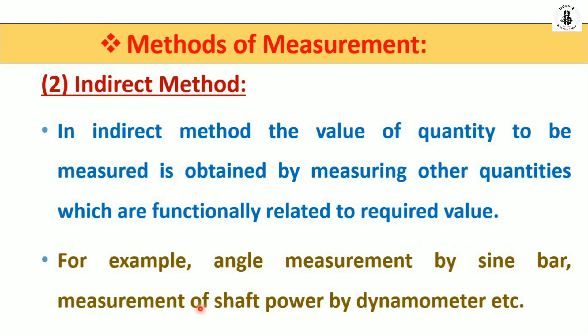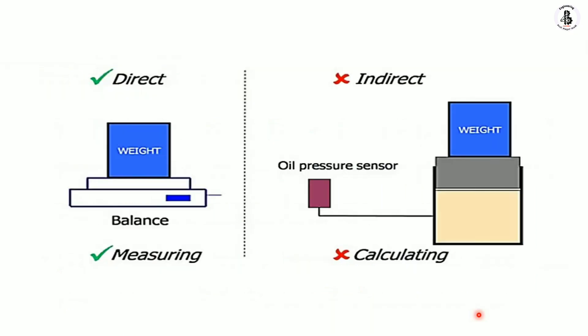Another example is measurement of shaft power by dynamometers, which is also an indirect kind of measurement. So these are examples of direct and indirect measurements.